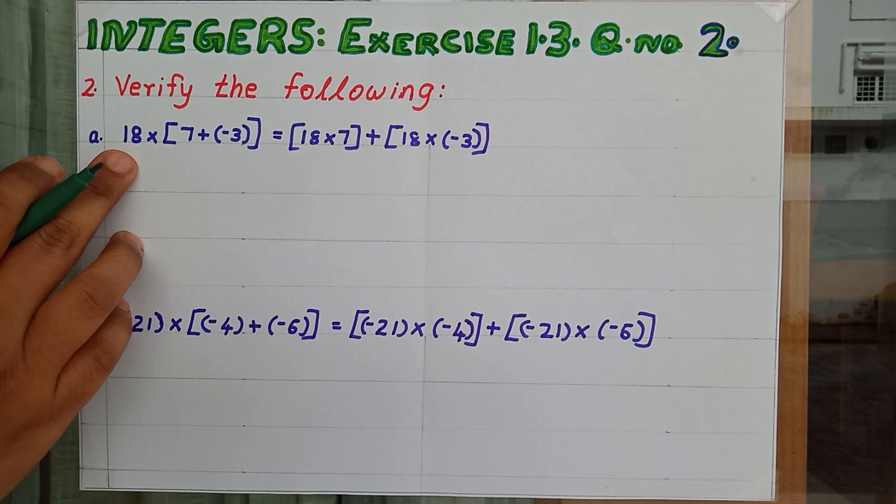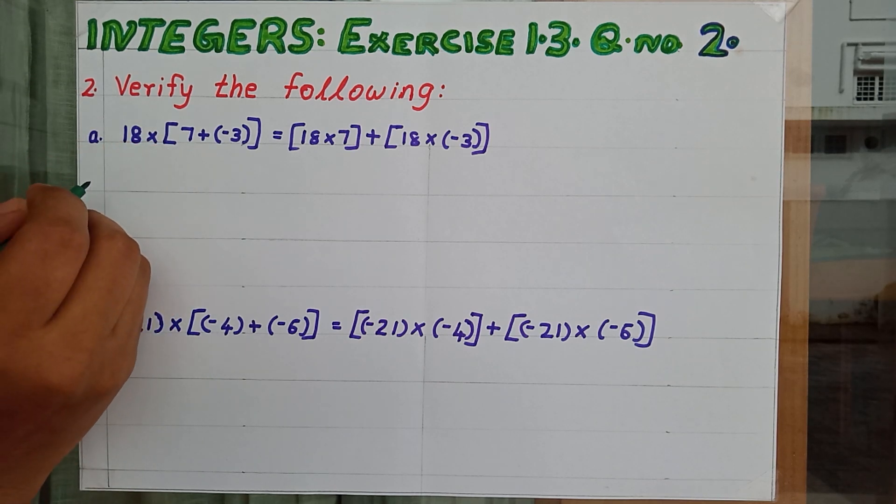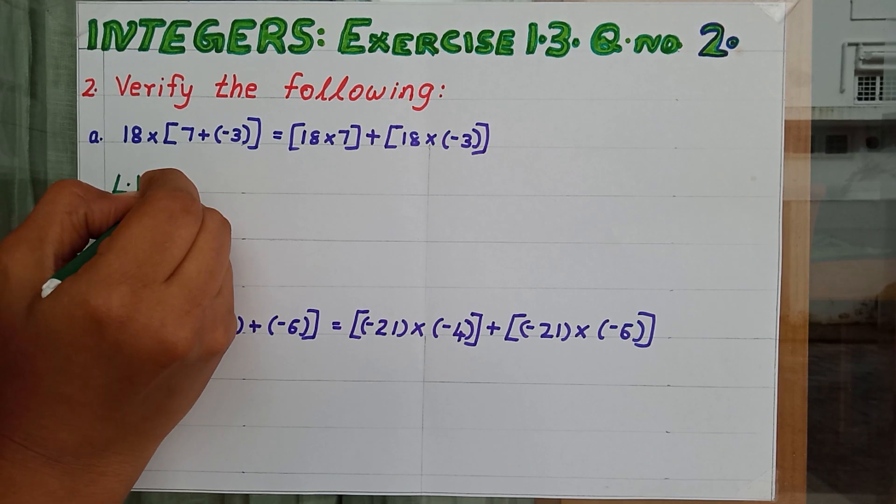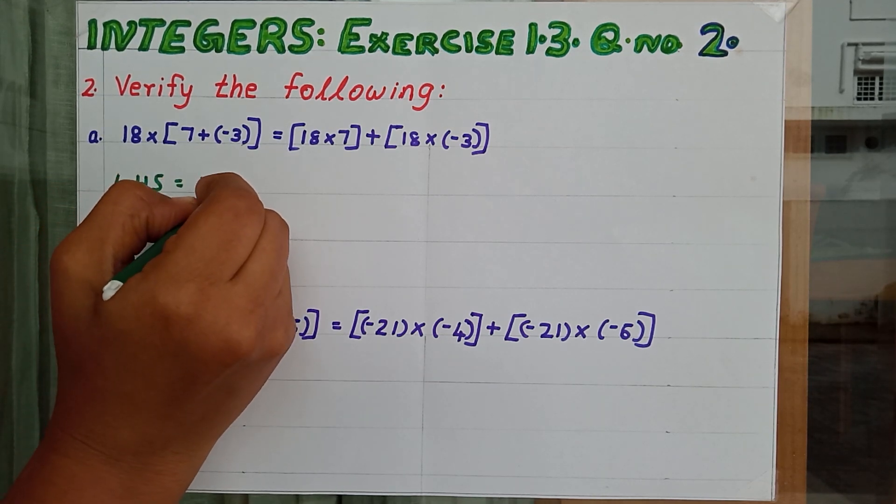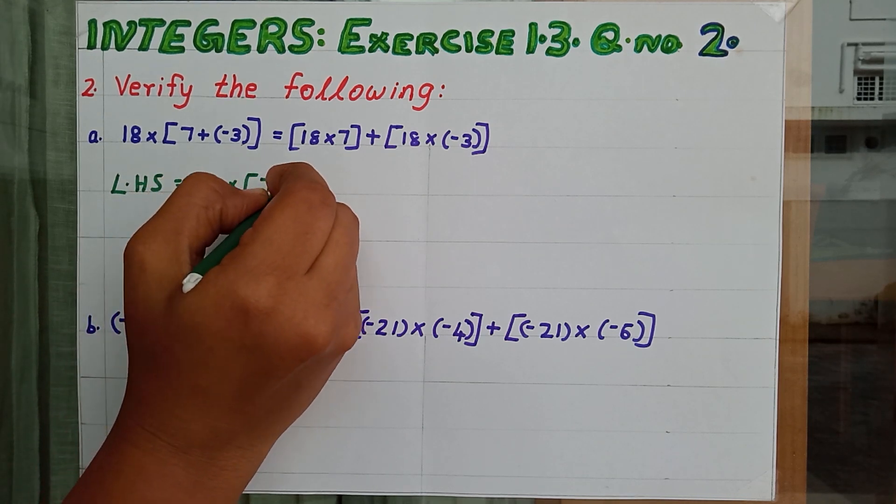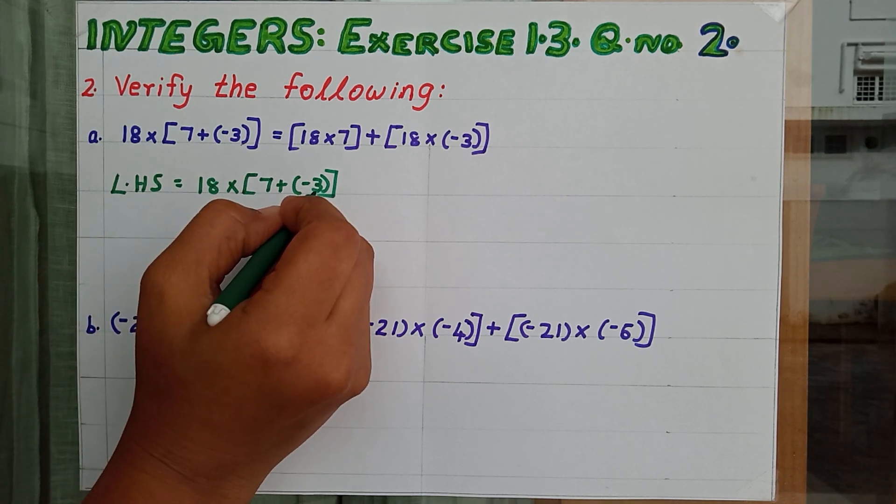First we can calculate 18 into 7 plus minus 3, that means LHS. LHS equal to 18 into 7 plus minus 3. What is the value inside this bracket? 7 plus minus 3.